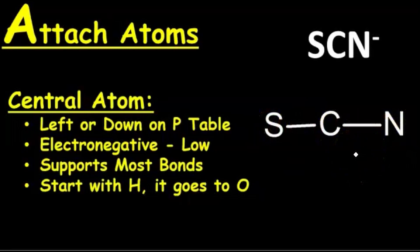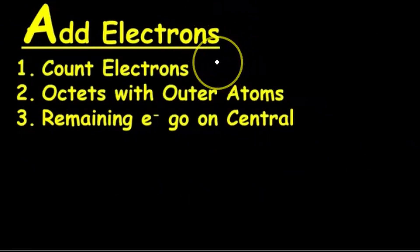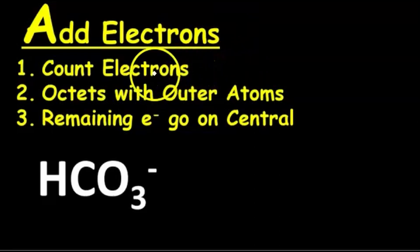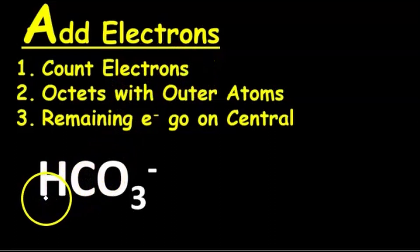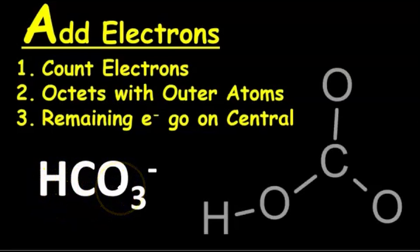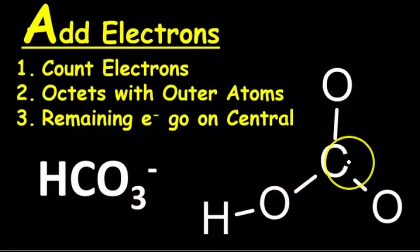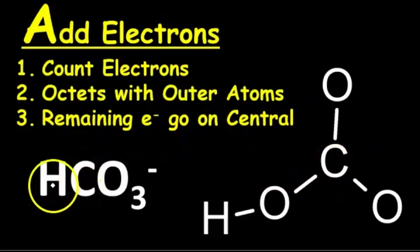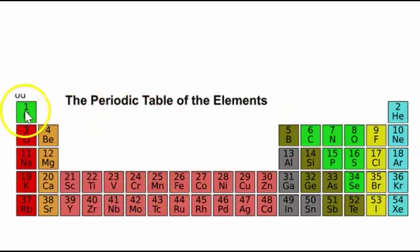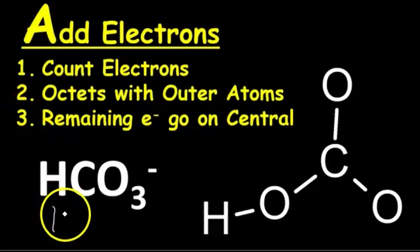That's our first step. Now for step two — adding electrons. To add electrons, we first need to count how many electrons to add. Looking at HCO3-, after step one we have the H bonded to an O and everything else bonded to the central atom. We need to count the electrons using the periodic table. H is here and has one electron — we start from the left and count. That gives us one for H.